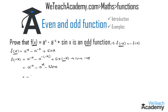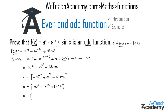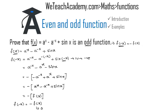Now taking minus as a common factor, we get minus · (-a⁻ˣ + aˣ + sin(x)), which we can write as -(aˣ - a⁻ˣ + sin(x)). We observe that this is the given function f(x), so this equals -f(x). Hence we conclude that f(-x) = -f(x), and therefore the given function is an odd function.